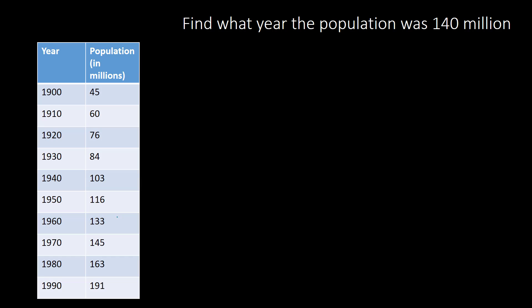Let's try one more going back the other direction. The question is: find what year the population was 140 million. So 140 is between 133 and 145. The question is what fraction of the way is it between those two numbers? We find the gap: 145 minus 133 equals 12. Then, starting at 133, we have to add 7 to get to 140. So we're 7 into the gap — 7 twelfths of the way between 133 and 145.